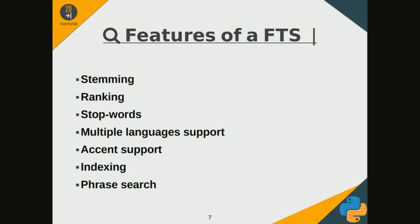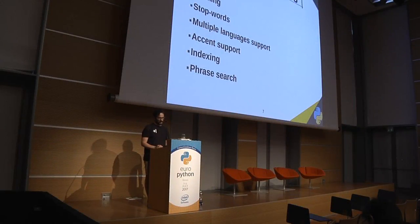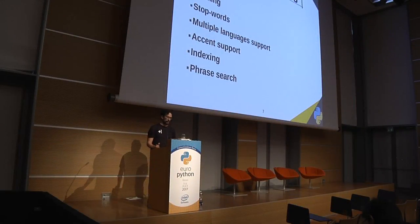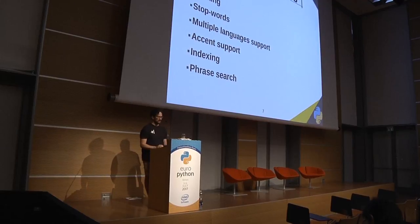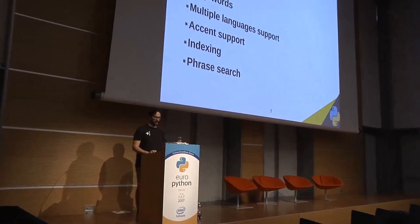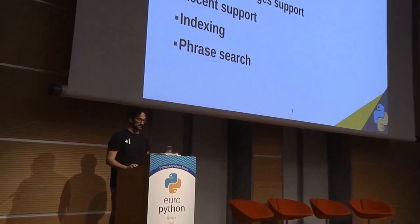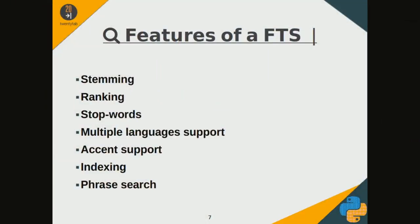This is a list of some features that we can find in an advanced enough full-text search solution that we can use in a real project: stemming, rankings, stopword removal, multiple language support, accent support, indexing, and phrase search.